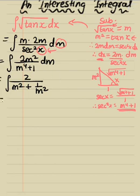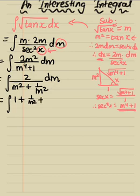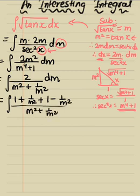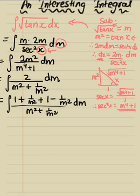Now I'm going to split the numerator: we write (1 + 1/m²) + (1 - 1/m²) all over (m² + 1/m²) dm. Basically, 1 + 1 = 2, and +1/m² − 1/m² = 0, so the numerator is still equal to 2 — just in a different form. This is perfect.